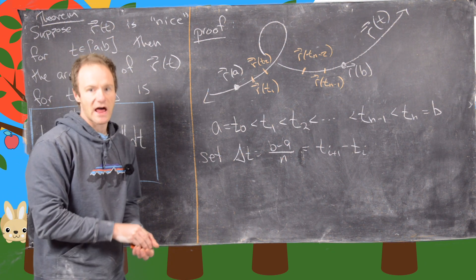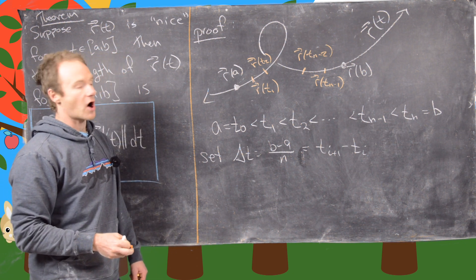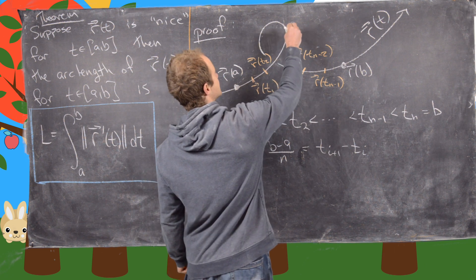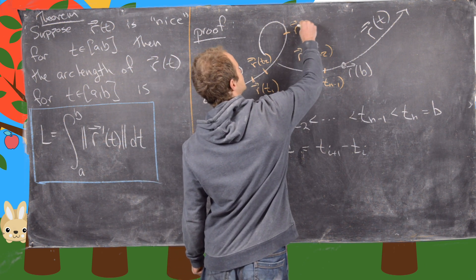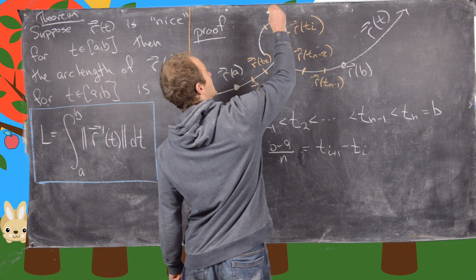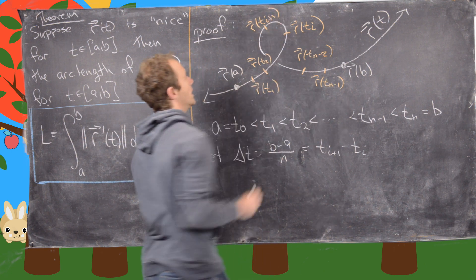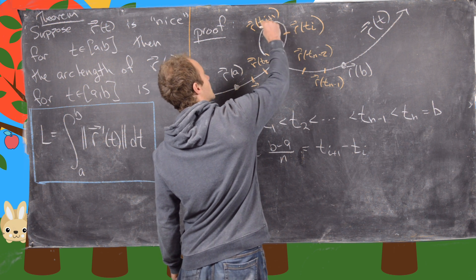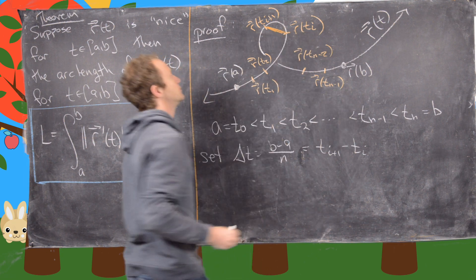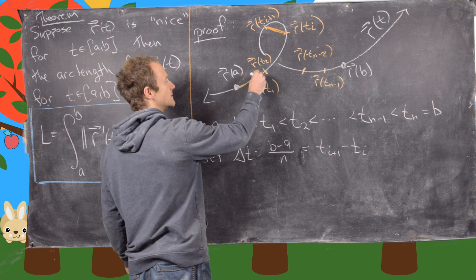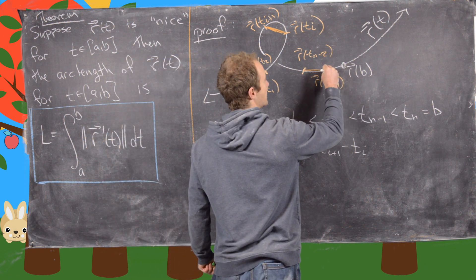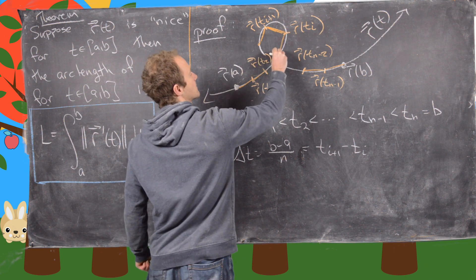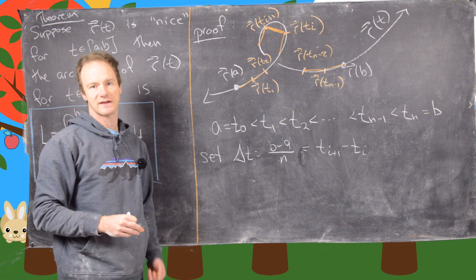Now I want to look at an arbitrary point along this — I'll look at a point where it's very curved because that'll make the picture a little bit better. Let's say right here is the point r of t_i, and then over here is the point r of t_{i+1}. We can approximate the length of this arc by a line segment between these two points. In fact, what we'll do is approximate the length of the entire curve by line segments between each of these points.